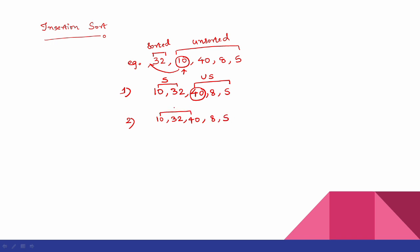Now 3 elements are sorted. Next, we take the number 8. When we take 8, the sorted part is 10, 32, 40. We compare 8 with 40 - move 40. Compare 8 with 32 - move 32. Compare 8 with 10 - move 10. We have an empty space and we place 8 there.